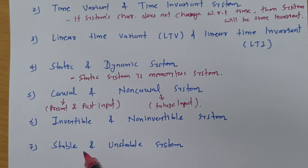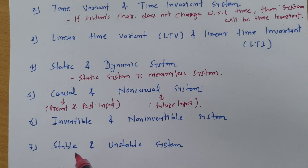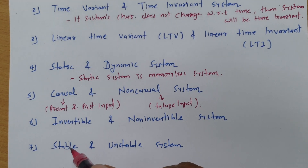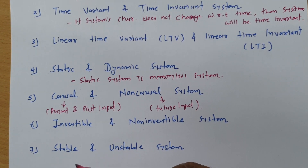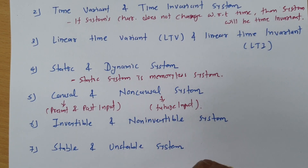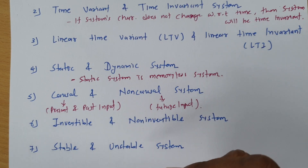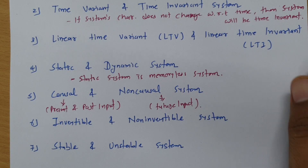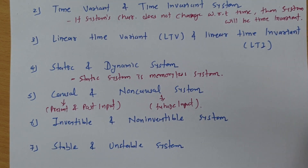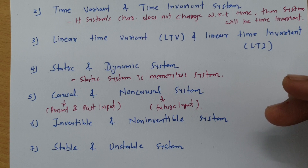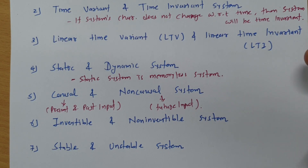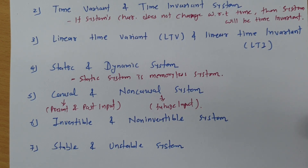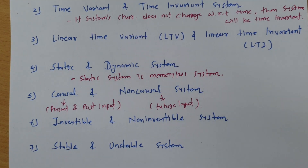If a system produces a bounded output for a bounded input, then the system will be a stable system. If the system's response is not bounded for a bounded input, it will be an unstable system. These are the classifications of systems. In the next session I will explain linear and non-linear systems in detail. Thank you so much for watching this video — please give your valuable suggestions.